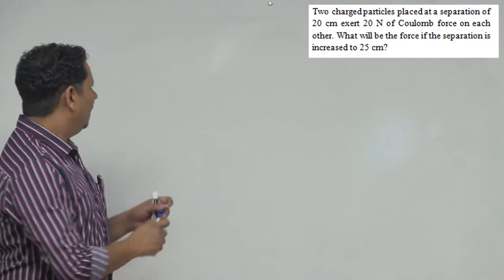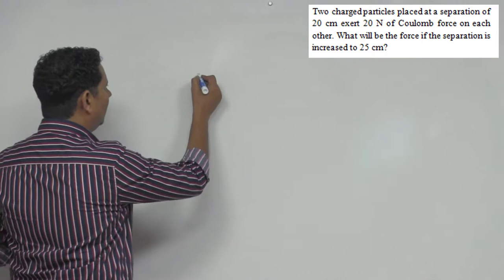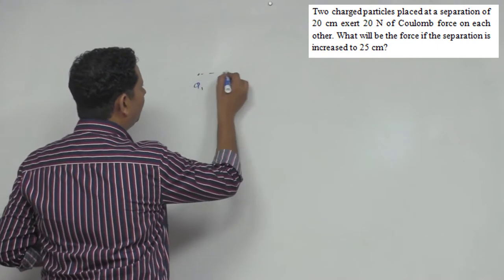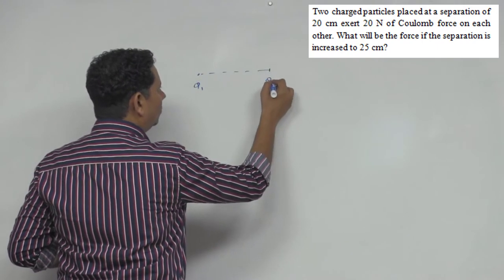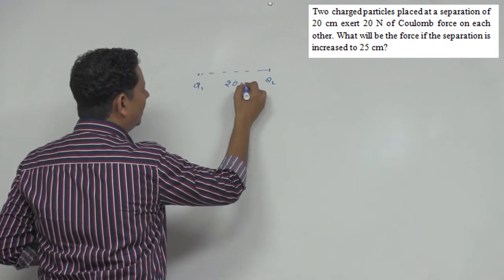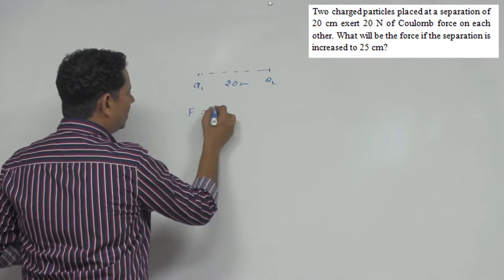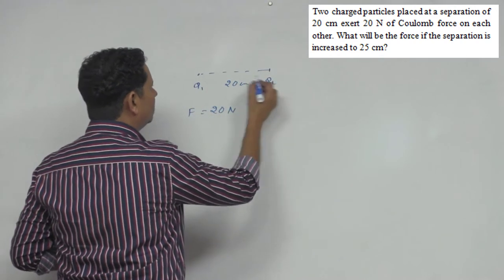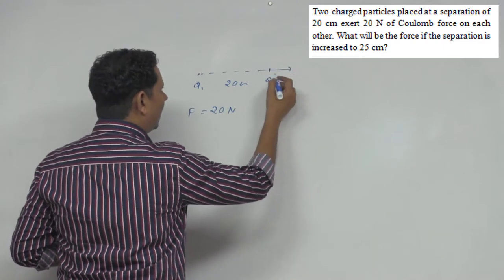Now, simple question. So you have two charges here. Let's call them Q1 and Q2. The separation between them is 20 centimeters, and the force is 20 newtons. Now in this case, we increase the separation.